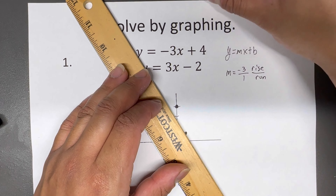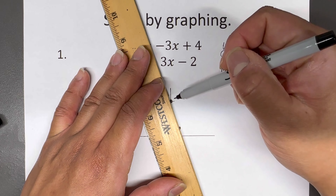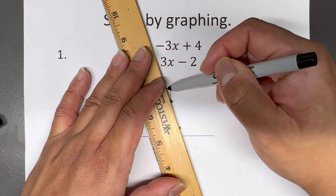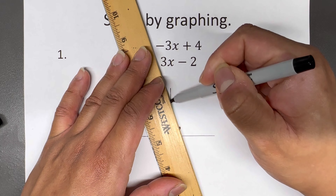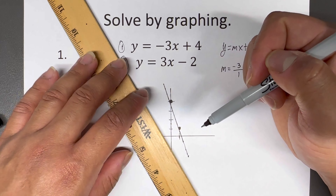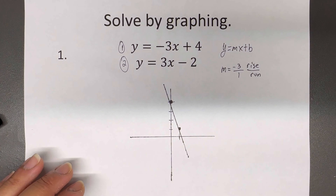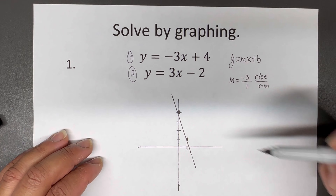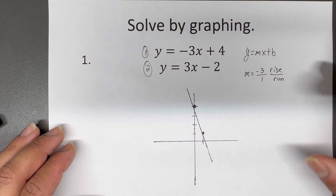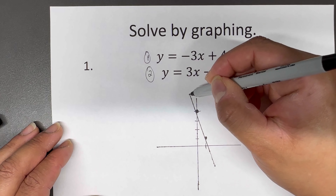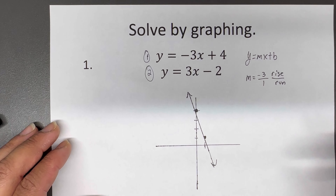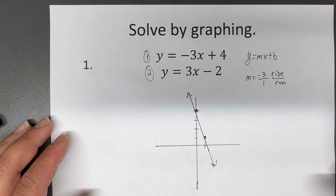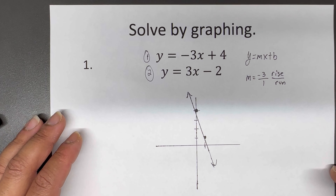Now we're going to put these together and we should have something that looks similar to this. It's not perfect, but we have our first line. So now what we're going to do is plot the other line on the graph. The other line says Y equals three X minus two, and we're going to go through the same process.